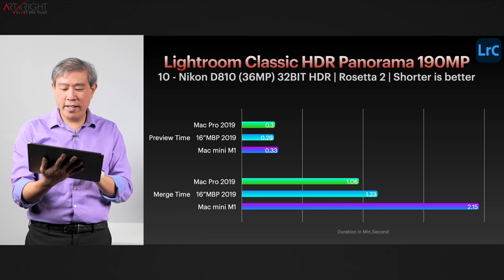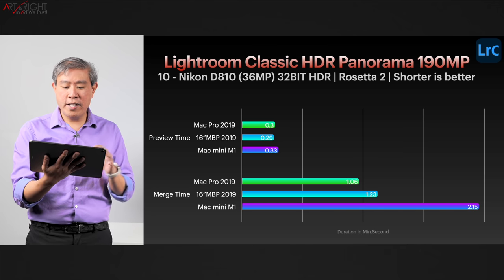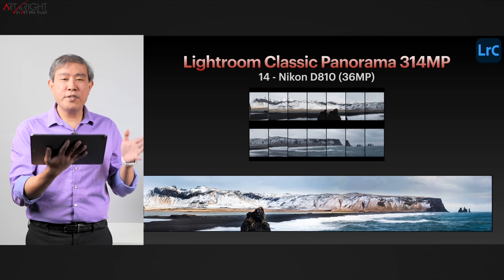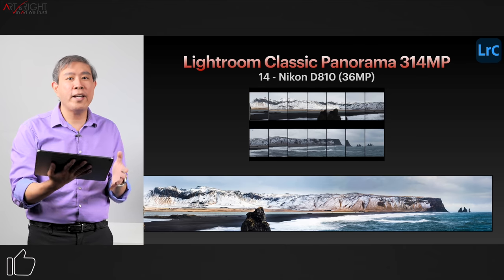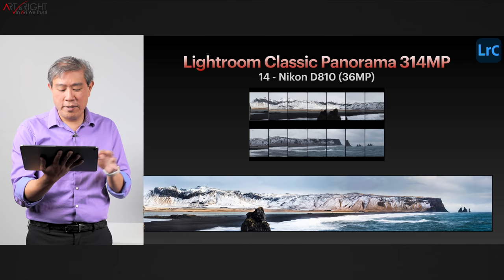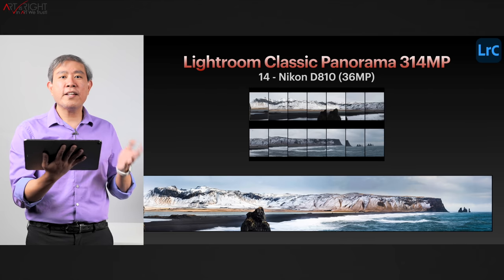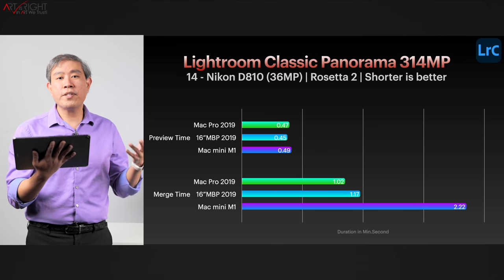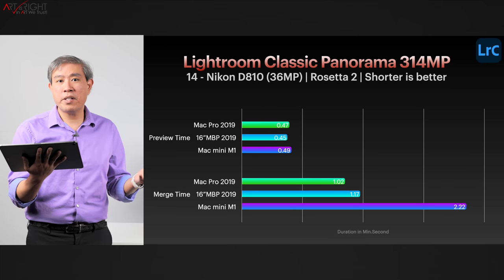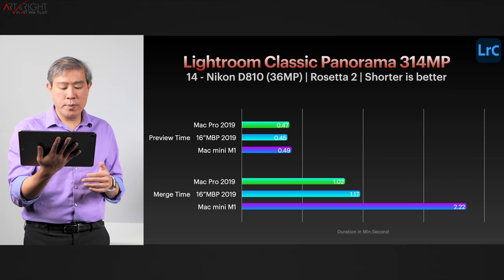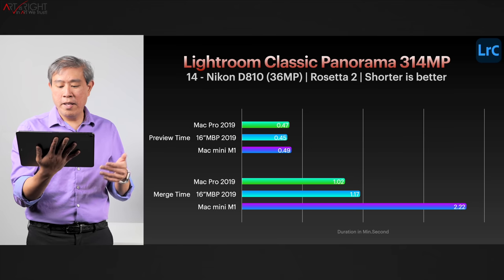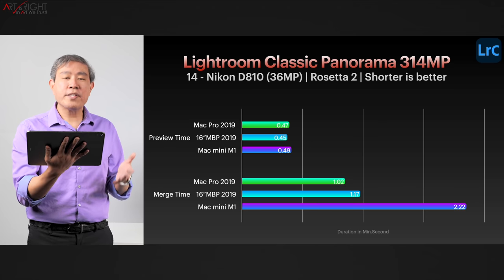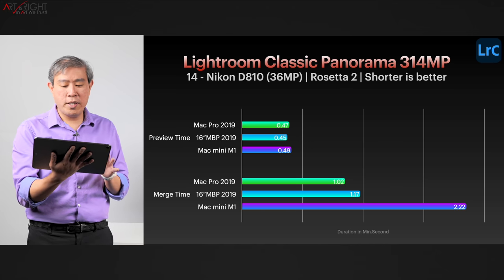Here's another Panorama merge — 14 Nikon D810 36-megapixel files merged to create a 314-megapixel file. Preview generation was around 30 seconds across all machines. For the merge: Mac Pro was fastest at about 1 minute 2 seconds, MacBook Pro at 1 minute 17 seconds, and the Mac Mini took longer at 2 minutes 22 seconds — roughly double the Intel times again.